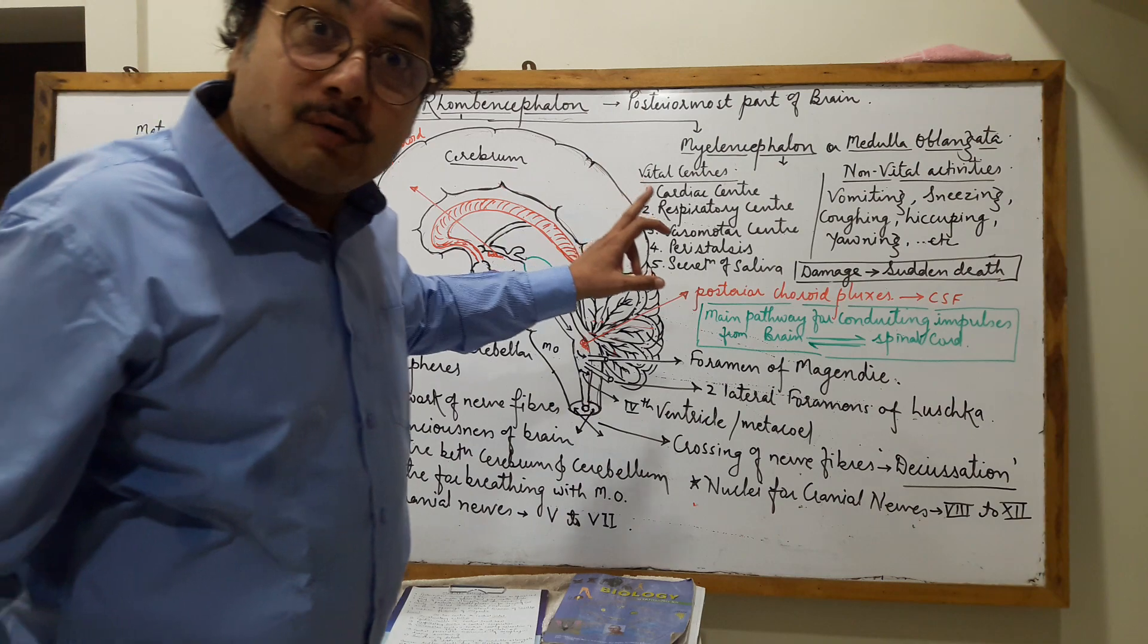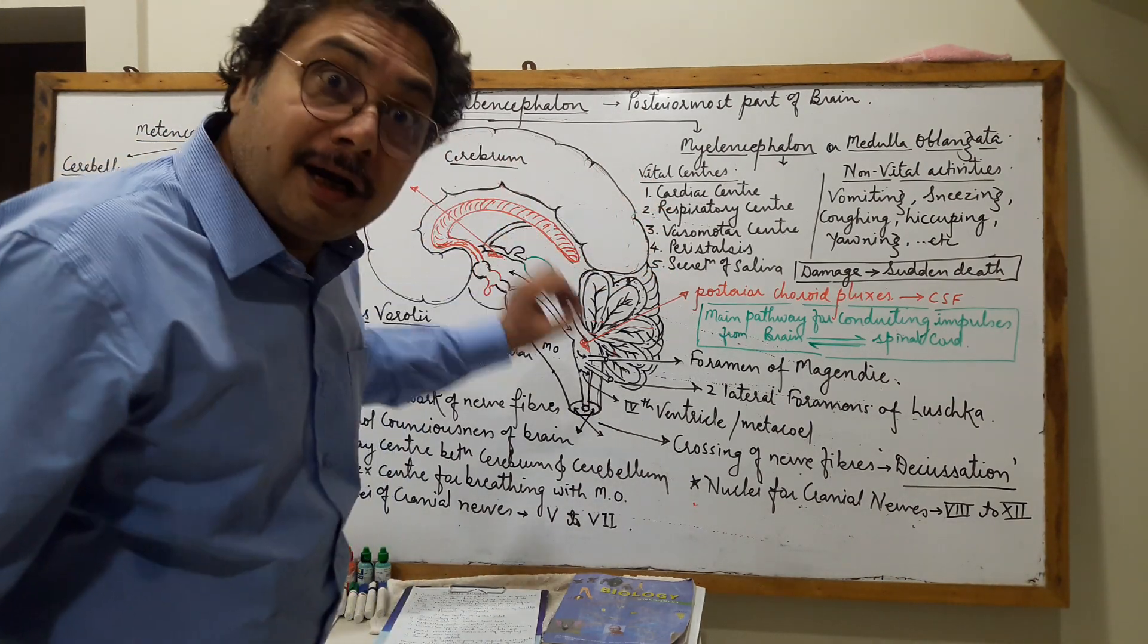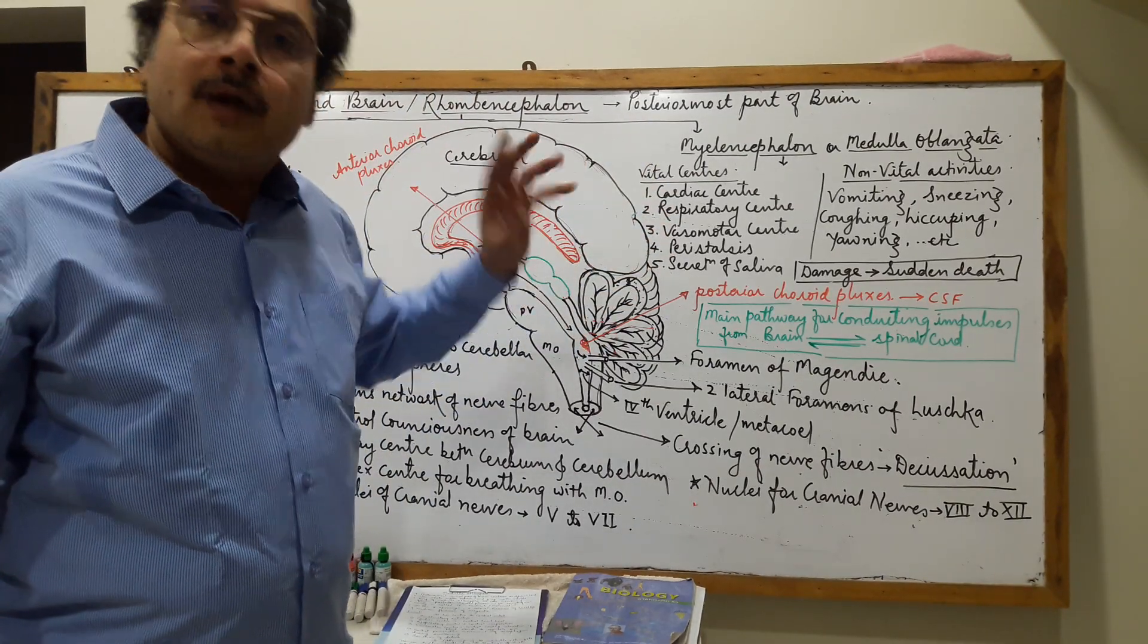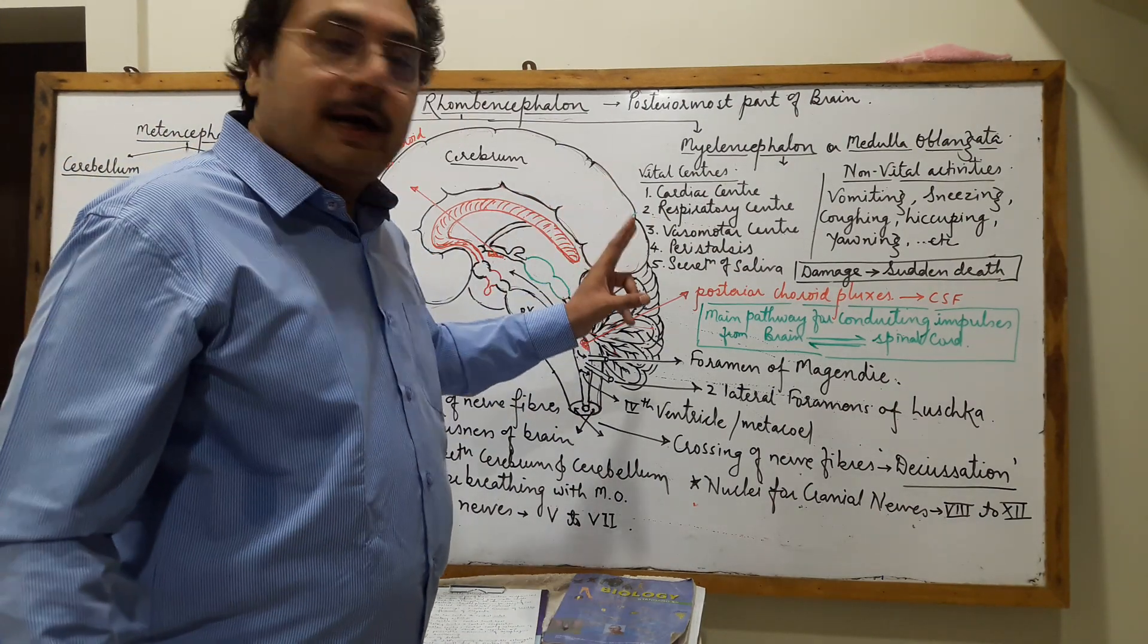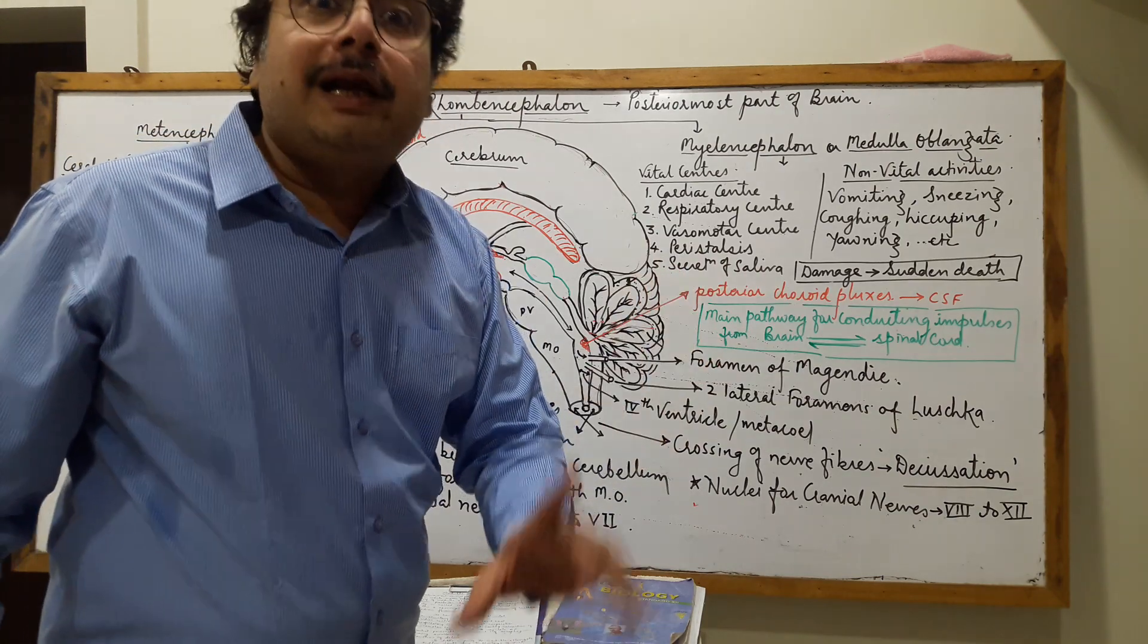These are essential vital centers for life. When there is even a little damage to the medulla oblongata, the centers get blocked. Heart activities get suddenly stopped. Whenever the heartbeat stops,